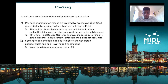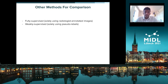The second step involves combining the pseudo labels obtained in step one along with pixel-level expert annotations to train a semantic segmentation model. In training, we sample expert annotations with probability p equals 0.9, which provides the best results. For comparison, we also have a fully supervised setting using only radiologist-annotated images, and a weakly supervised setting using only pseudo labels to train the segmentation model.